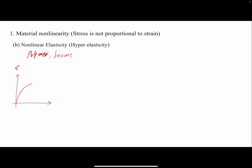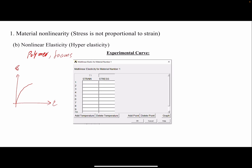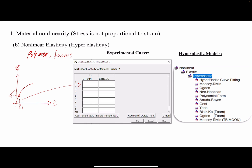When we can use the hyper-elasticity model, our options for modeling non-linear elasticity are similar to plasticity. Either we can use the experimental curve by plugging in the stress-strain curve — saying that at this point we have corresponding strains and stresses — and plugging those values into your model, whether you're using software or writing your own code. Or we can use the common models available for hyper-elastic materials.